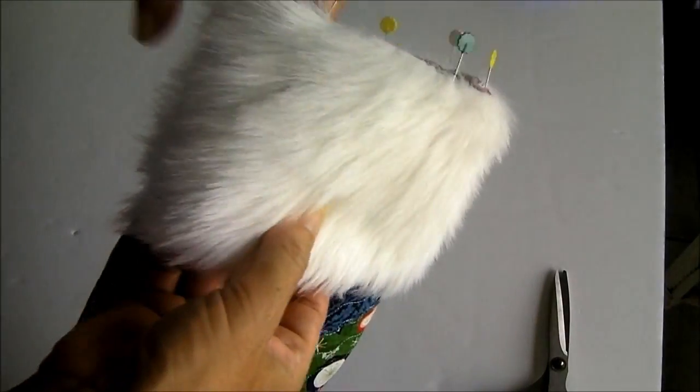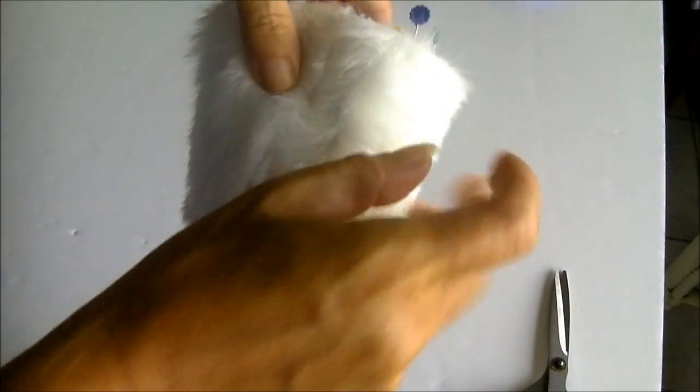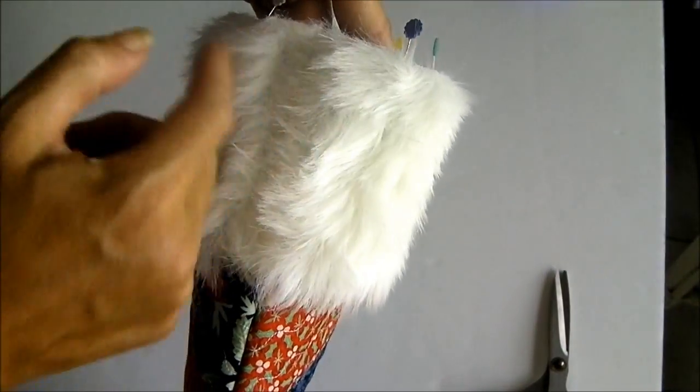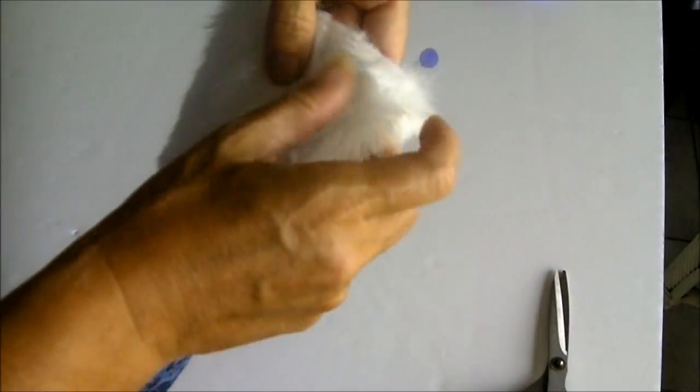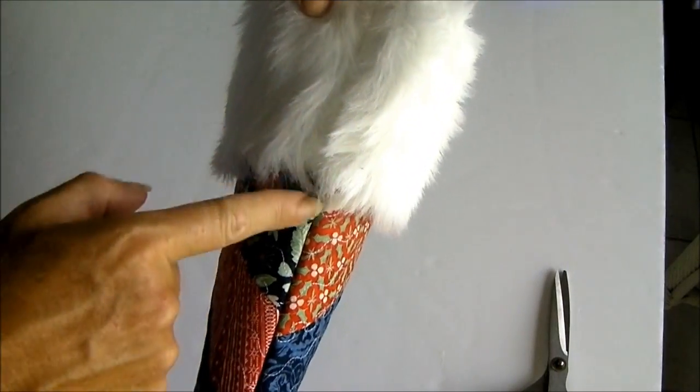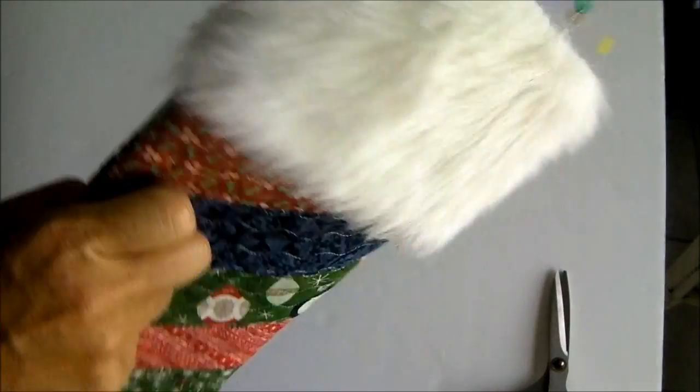So I've sewn my tube of fur and just at the back here where the seam is take a moment just to pull all the bits that you've sewn out of the seam because that'll create a more fluffy look on the back. I'll do that off camera and then this back seam you'll match that with the back seam of your stocking.